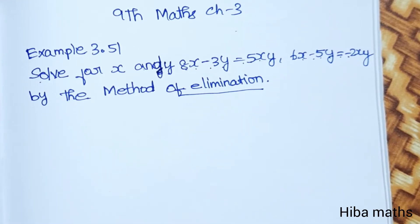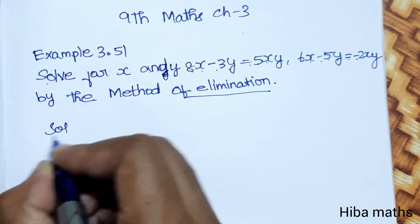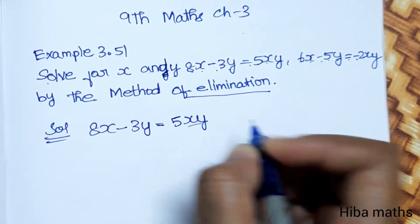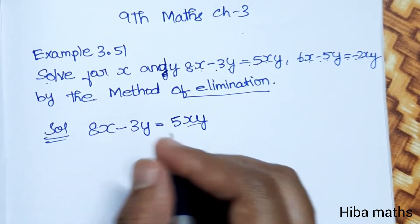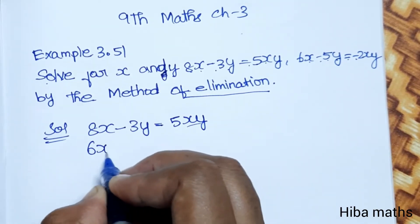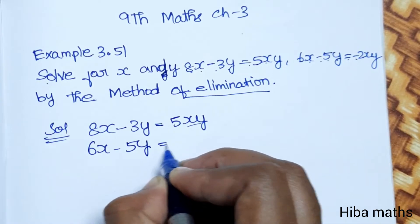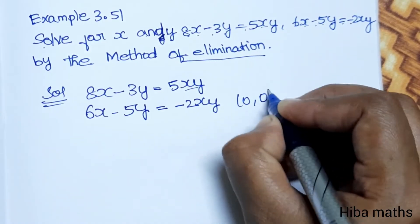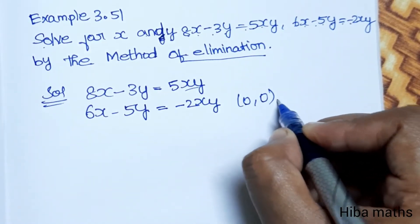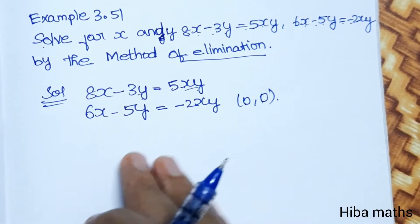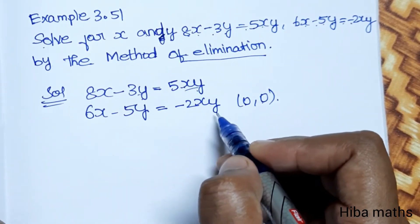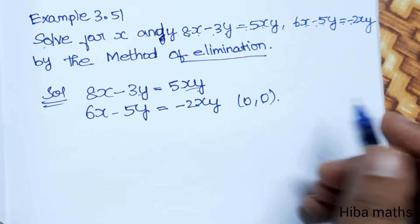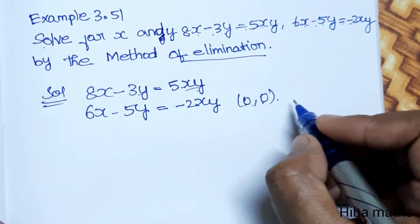This is the elimination method. In the question, 8x minus 3y is equal to 5xy — this is not in linear form; we have an xy term. So one solution is x is equal to 0 and y is equal to 0. The point (0, 0) is a solution to this question.